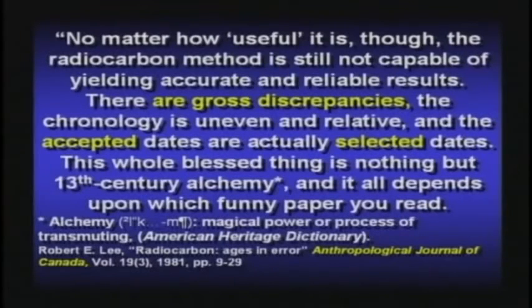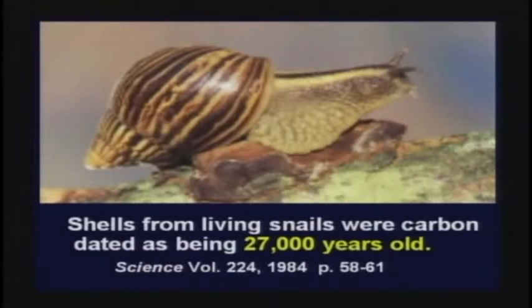This whole blessed thing is nothing but 13th century alchemy. That's 1981. It never gets better. In 1984, living snails were carbon dated at 27,000 years old. In 1992, two mammoths found side by side were carbon dated — one is 22,000, the other is 16,000. Which one's right? Or are both of them wrong? Or are both of them right? There is no possible way to tell.